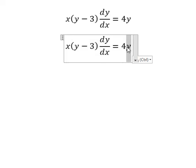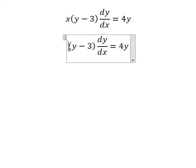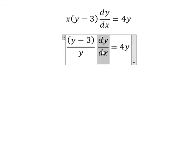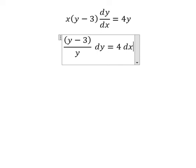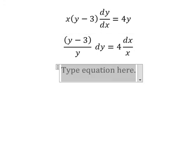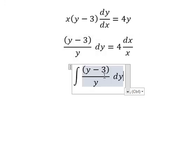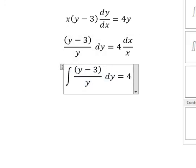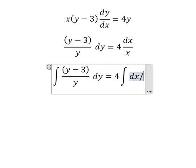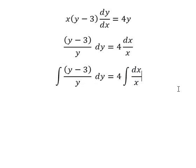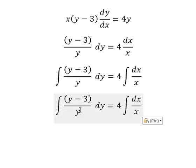Next we put the integration for both sides. So y minus 3 divided by y, that's 1 minus 3 divided by y.